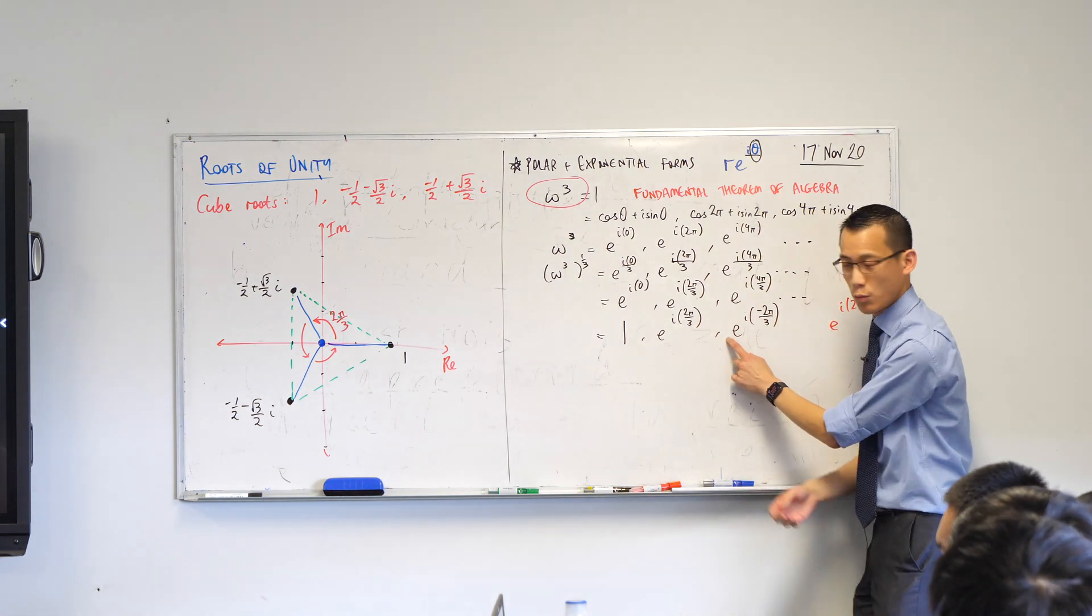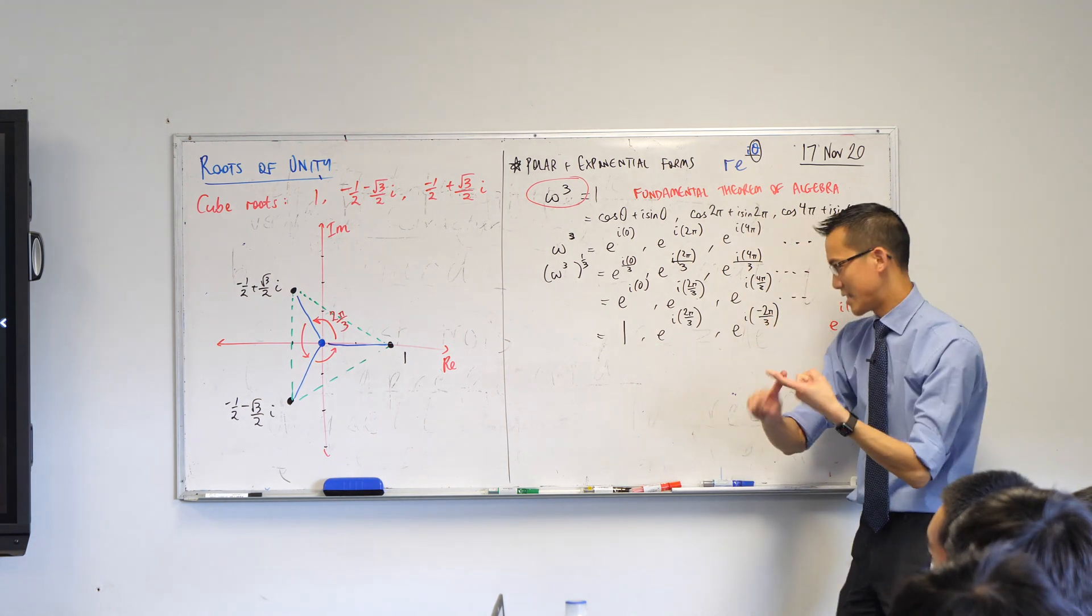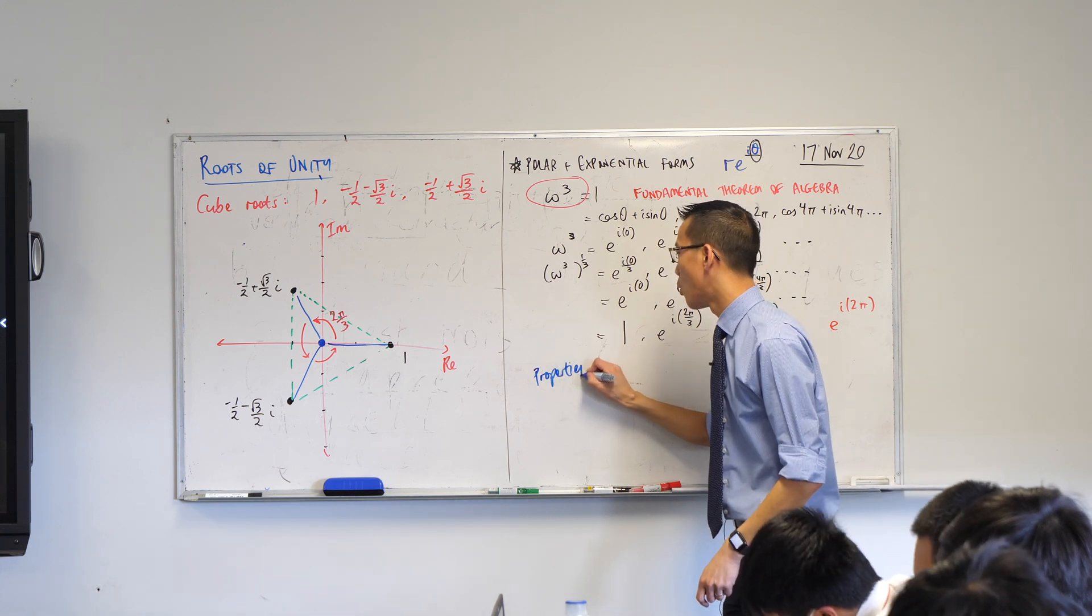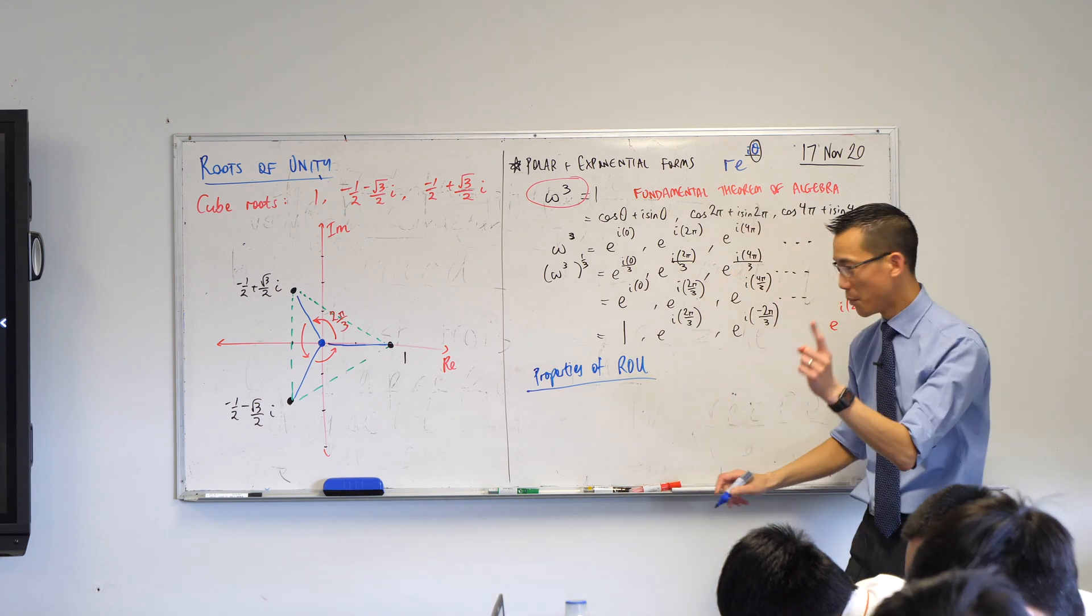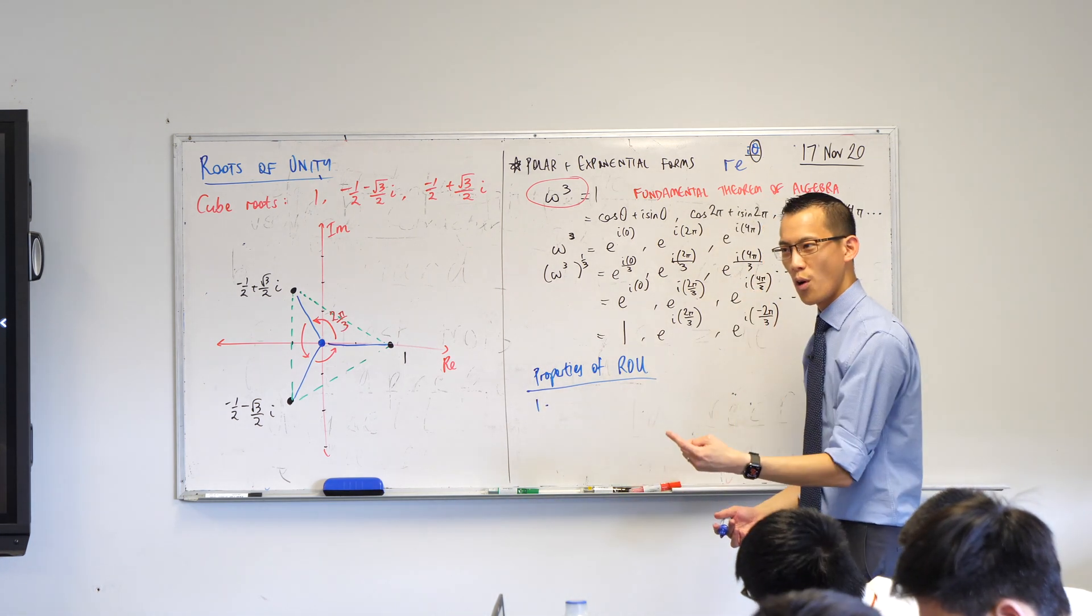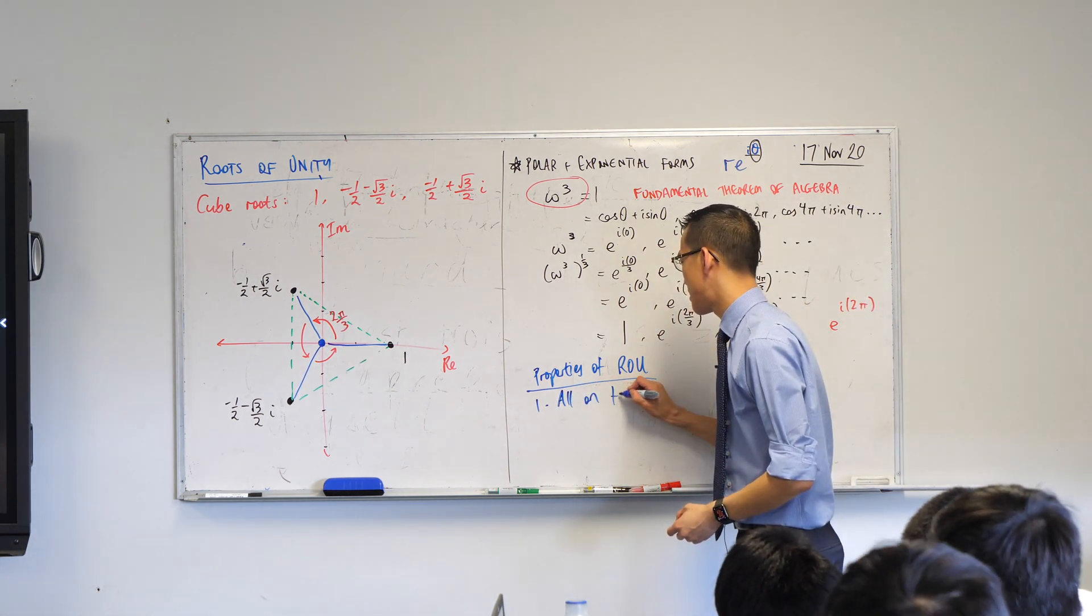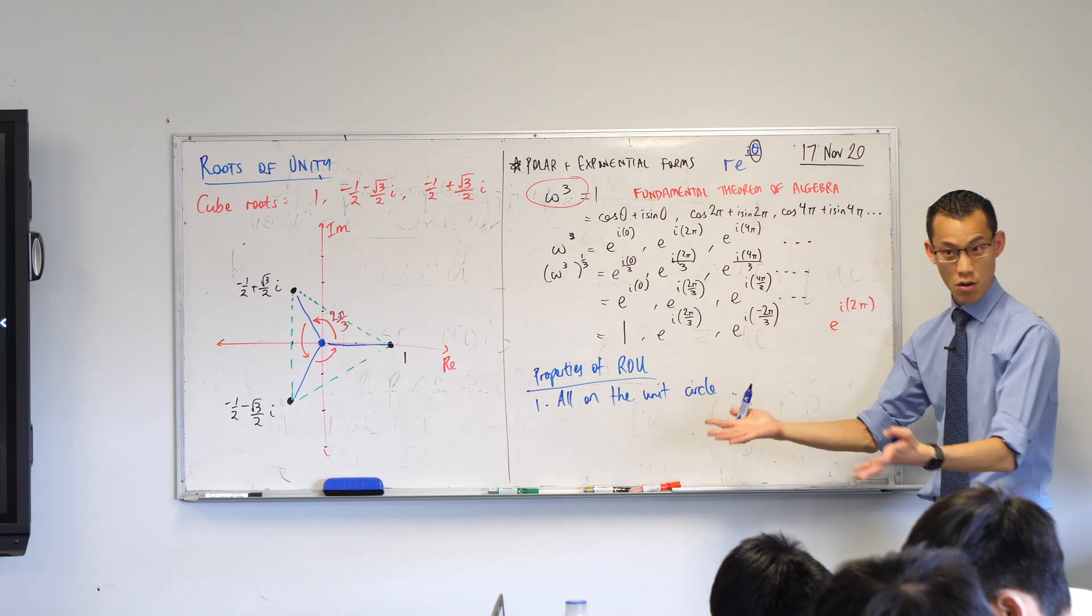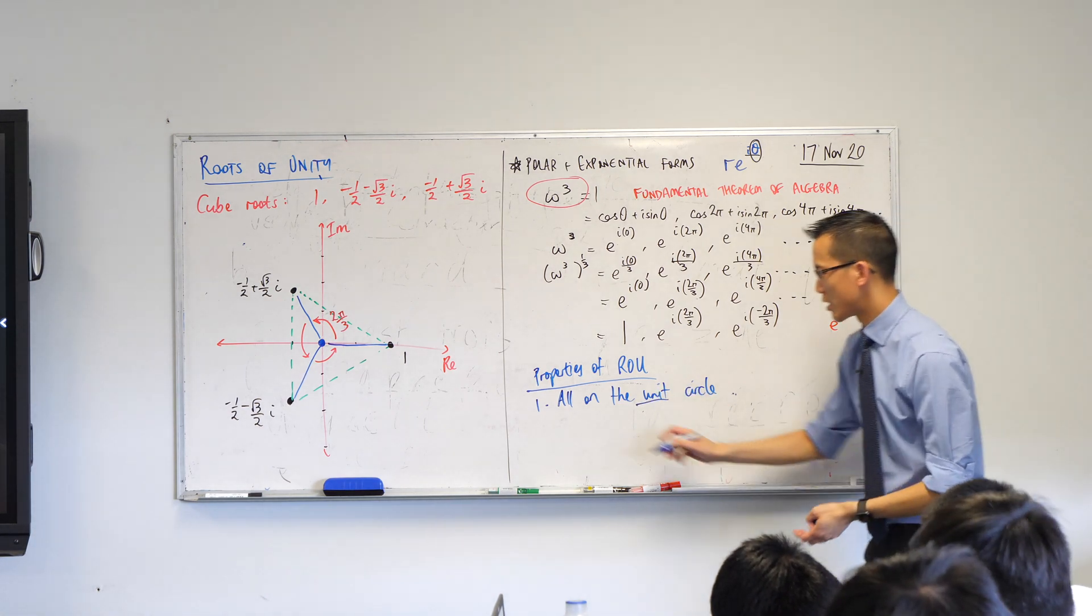So, that's our first thing. We should say, this is our properties of all roots of unity. Number one, a nice neat way that we can say this is that they're all on the unit circle, because that is the set of points that all have modulus one from the origin. Which is another reason why it's called roots of unity. That's the first thing.